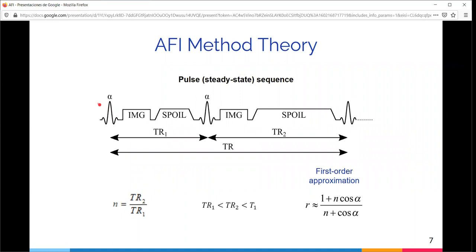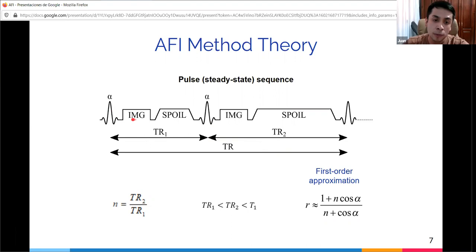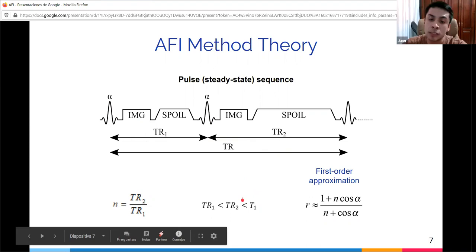The pulse sequence consists of two identical RF pulses at an excitation flip angle alpha, followed by two delays of different duration, TR1 and TR2. These two repetition times are subject to this relation where n is the ratio of TR2 to TR1. After each radiofrequency pulse, the signal is acquired.